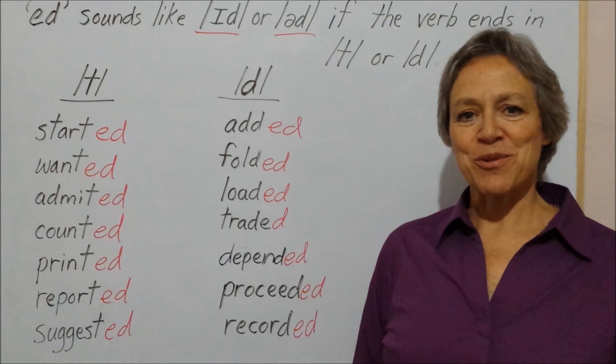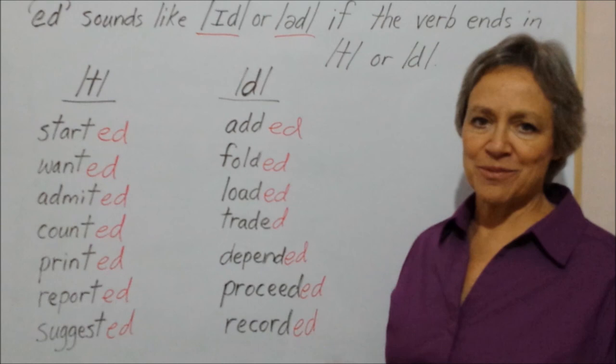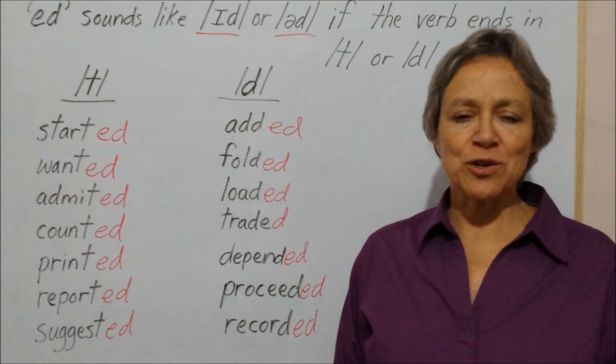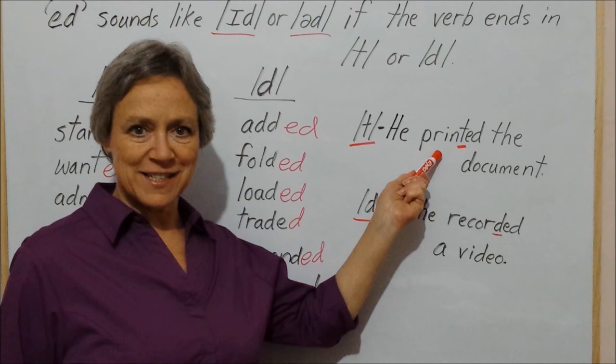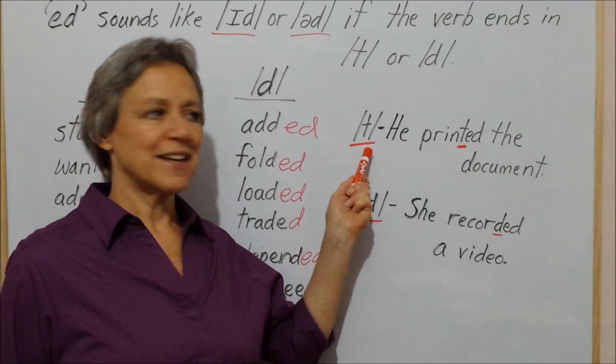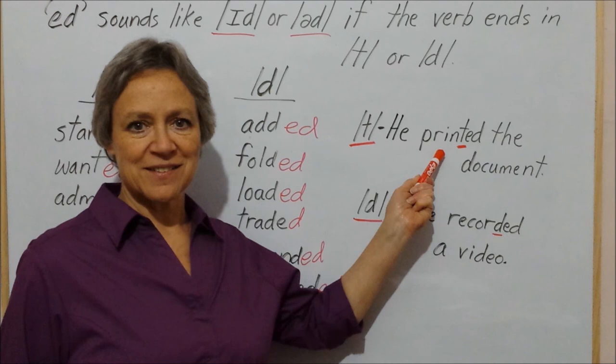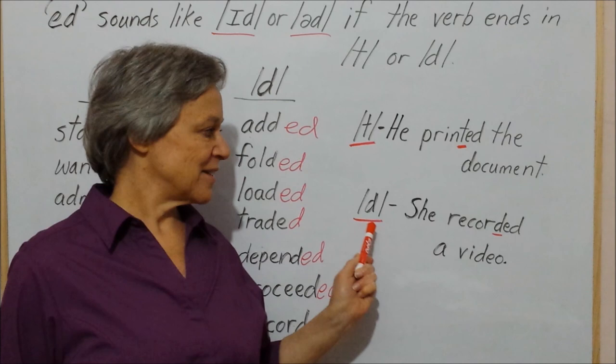So the ed ending sounds like /ɪd/ when I say it, and we get an additional syllable on that verb once we add that ed ending. Here are some sample sentences. The verb 'print' ends in the /t/ sound — he printed the document. The verb 'record' ends in the /d/ sound — she recorded a video.